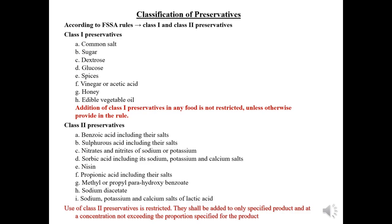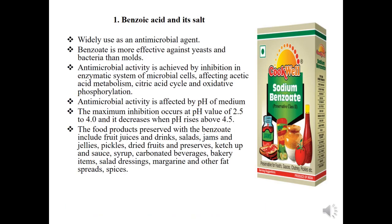Class two preservatives include mainly chemical compounds such as benzoic acid including their salts, sulfurous acid and their salts, nitrates and nitrites of sodium or potassium, sorbic acid including its sodium, potassium, and calcium salts, nisin, propionic acid including their salts, methyl or propyl para-hydroxy benzoate, sodium diacetate, and sodium, potassium, and calcium salts of lactic acid. Use of class two preservatives is restricted — they shall be added at concentrations not exceeding the proportion specified for each product.